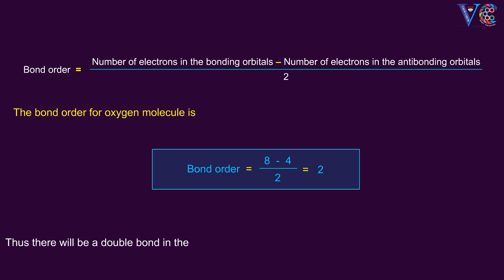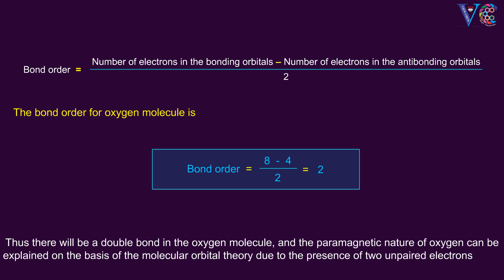Thus there will be a double bond in the oxygen molecule, and the paramagnetic nature of oxygen can be explained on the basis of molecular orbital theory due to the presence of two unpaired electrons in the π*2p anti-bonding molecular orbitals.